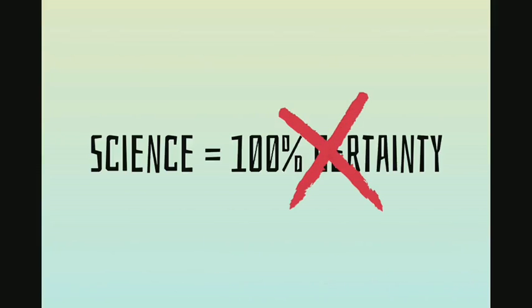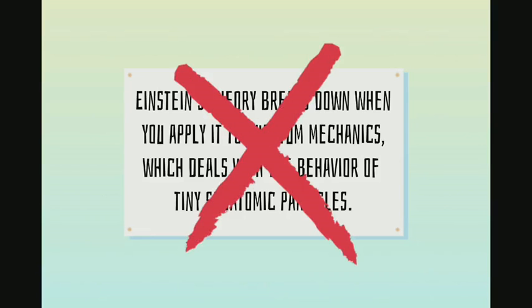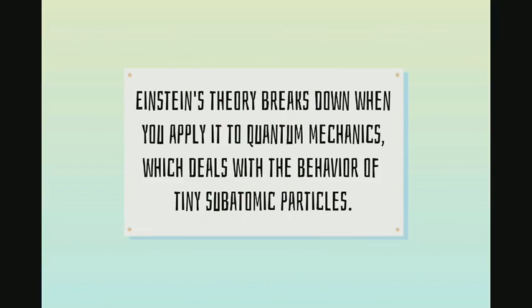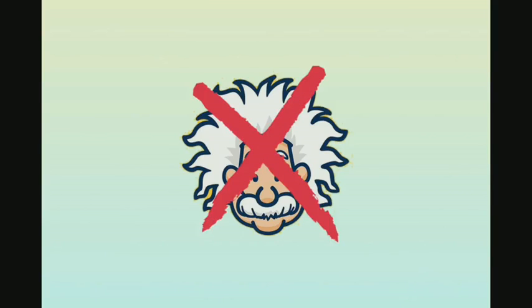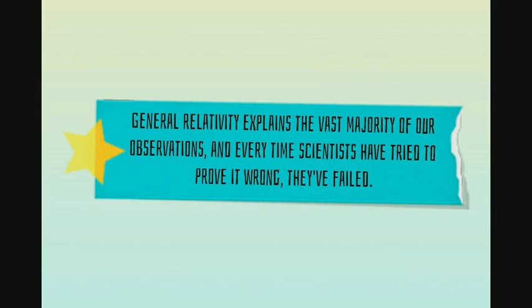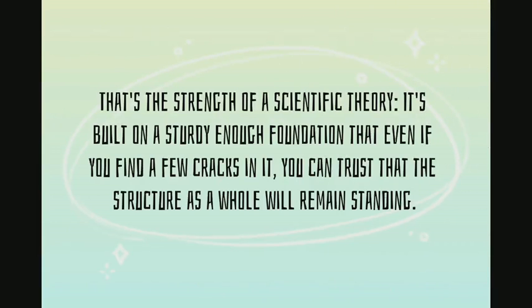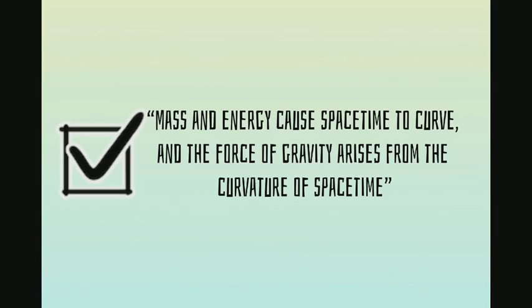But as we said, science never claims 100% certainty. Einstein's theory breaks down when you apply it to quantum mechanics, which deals with the behavior of tiny subatomic particles. As a result, many scientists are putting forward new hypotheses about gravity. But that doesn't mean Einstein was wrong — General Relativity explains the vast majority of our observations, and every time scientists have tried to prove it wrong, they've failed. That's the strength of a scientific theory: it's built on a sturdy enough foundation that even if you find a few cracks, the structure as a whole remains standing. As an example: mass and energy cause space-time to curve, and the force of gravity arises from the curvature of space-time.